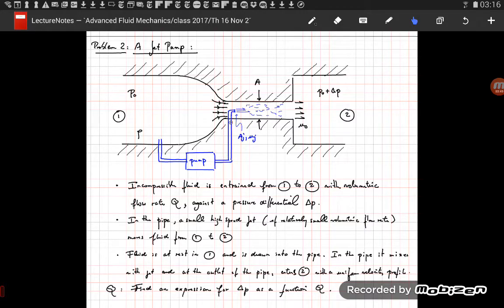And then the fluid goes here out of a nozzle with a small cross-sectional area. We call this cross-sectional area AJ at a very high velocity UJ. So the fluid is coming out of this nozzle at a very high velocity.